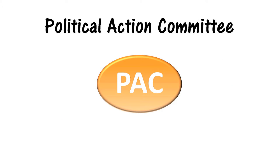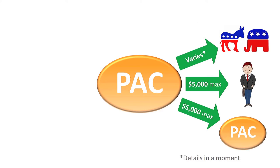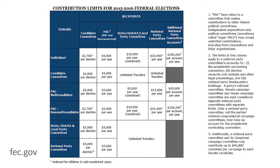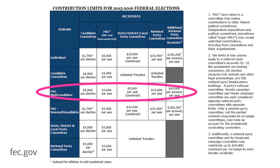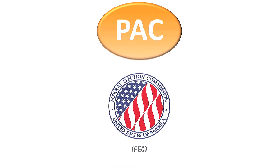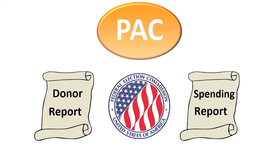A PAC is a political action committee. PACs can make limited contributions to candidate committees, political party committees, and other PACs. Individuals, candidate committees, party committees, and PACs can make limited contributions to a PAC per election. This chart from the Federal Election Commission's website shows more details on donors and recipients, including donation limits for multi-candidate and non-multi-candidate PACs. PACs must register with the FEC and report the names of their donors and account for their spending on a quarterly or monthly basis.